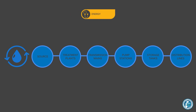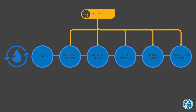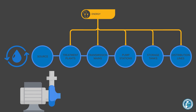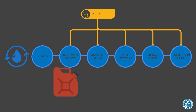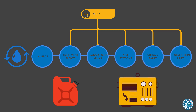Energy infrastructure is essential for providing electric power to facilities throughout the drinking water system. Treatment plants require electricity to power equipment and process control systems. Pump stations require electricity to run pumps, and the distribution system needs electric power to operate valves and manage flow. The energy sector also provides fuel for backup generators at critical water facilities.